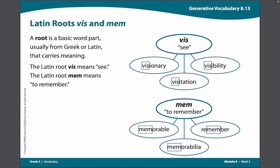Next, I see the syllable i, then the syllable te, and finally the syllable shun. Vis-i-tay-tion. I blend the root and the syllables to make the word visitation. The word visitation is a noun meaning to see someone.